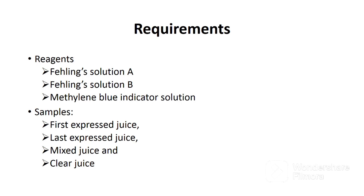The next requirement is samples. Under samples, you have first expressed juice, which is sampled at the first rollers of the milling tandem. Next, you have last expressed juice, sampled at the last rollers of the milling tandem. Next, you have mixed juice, which refers to the mixture of the primary and secondary juice. And finally, you have clear juice, which is sampled at the clarifier found at the juice treatment section.